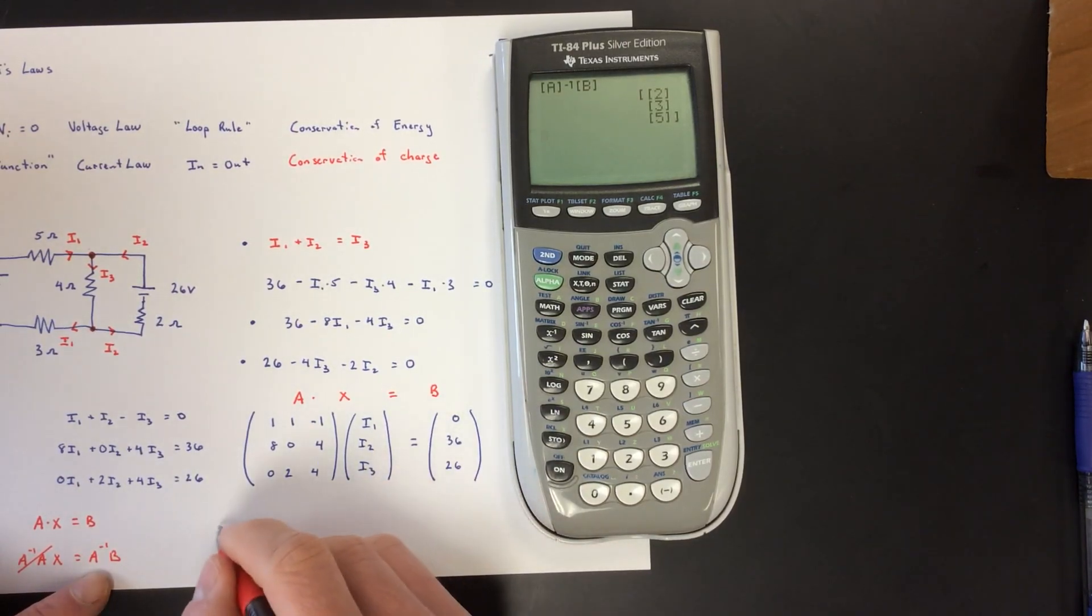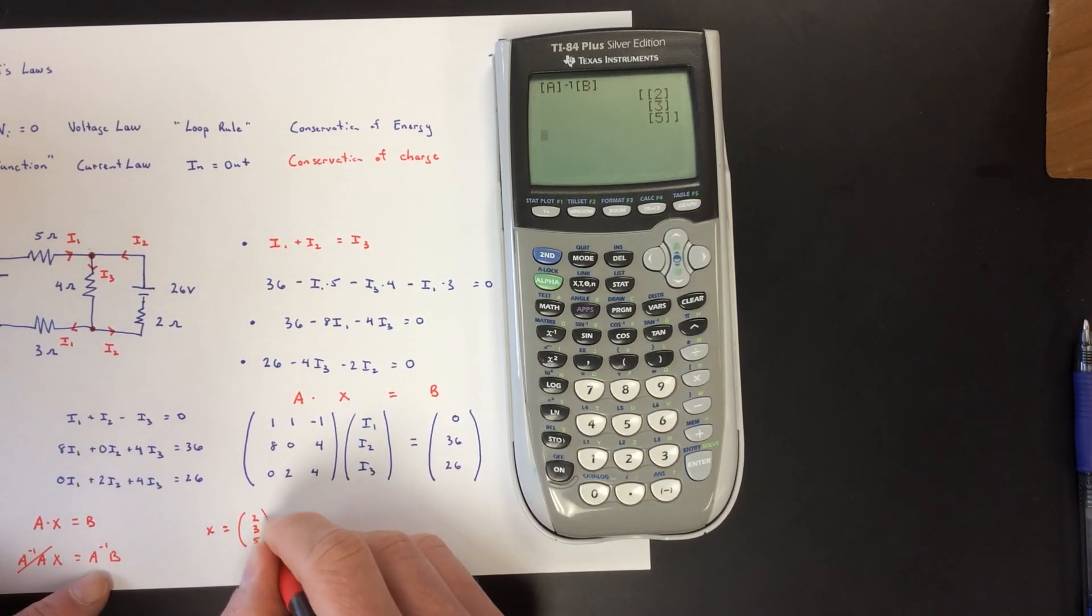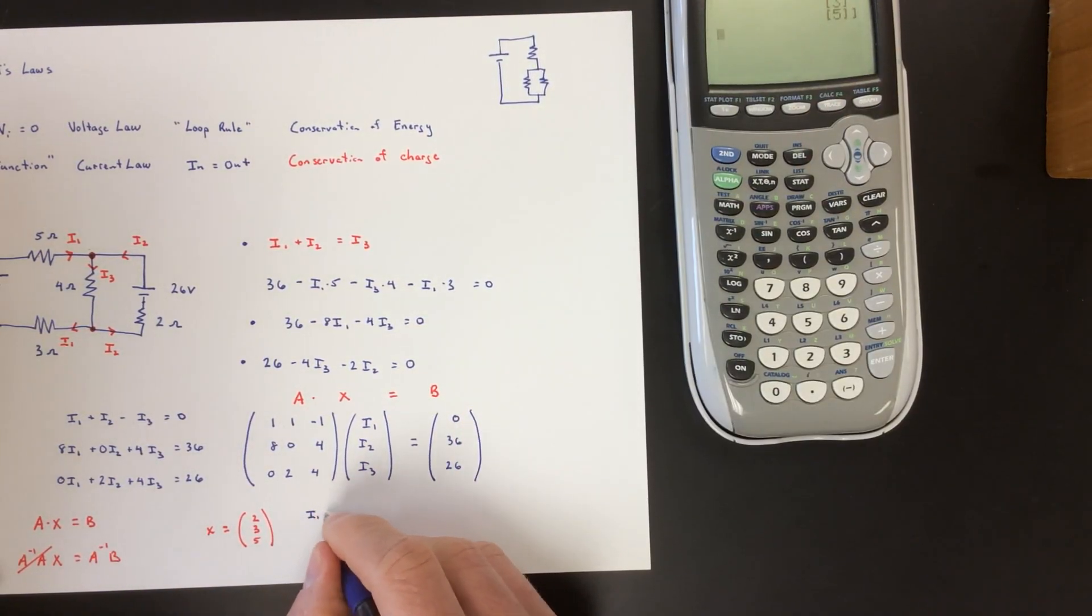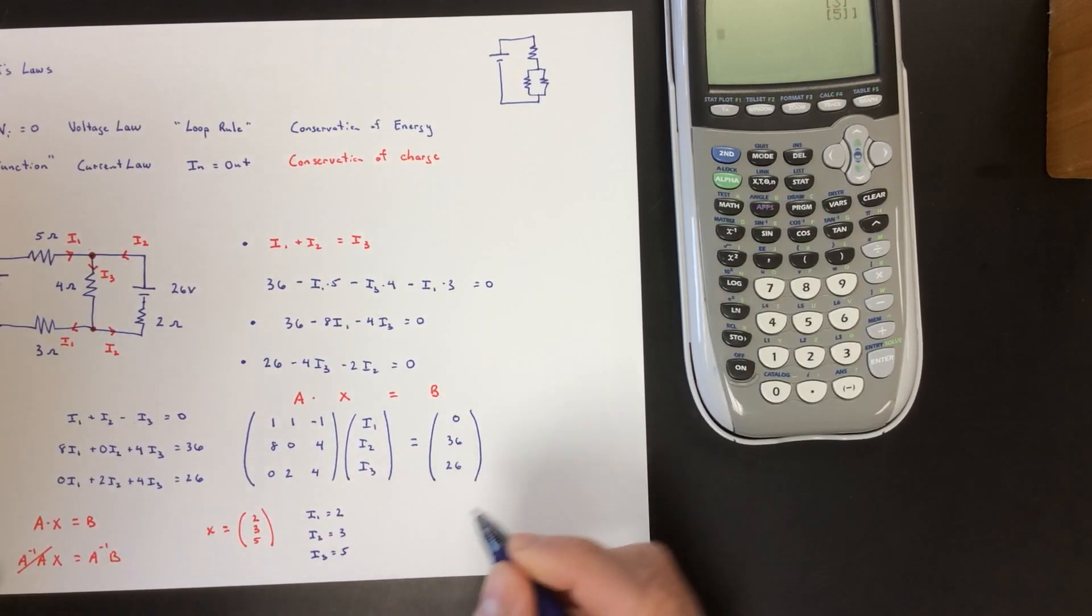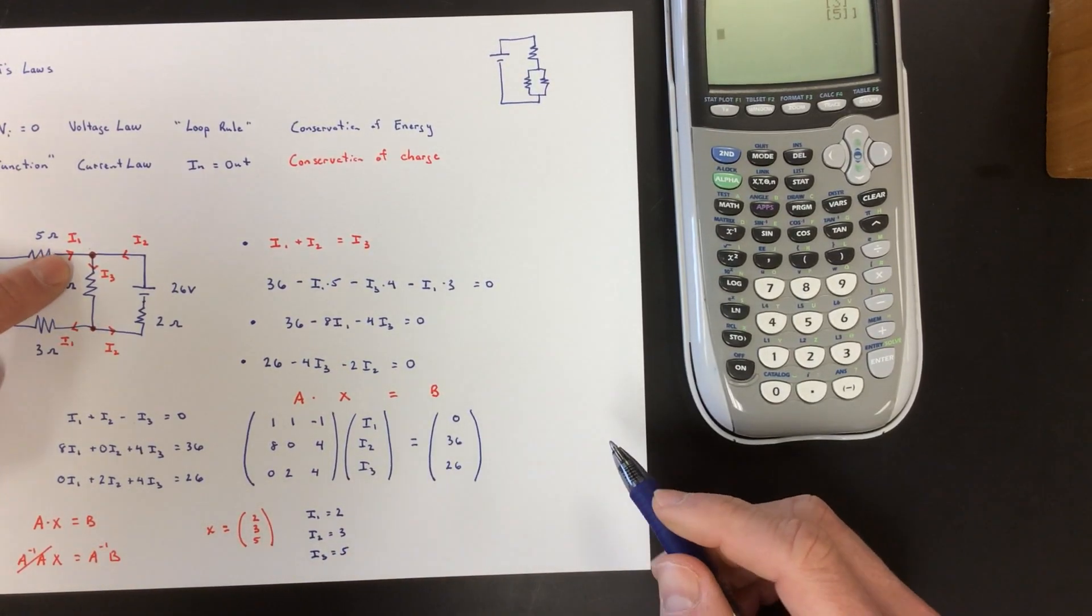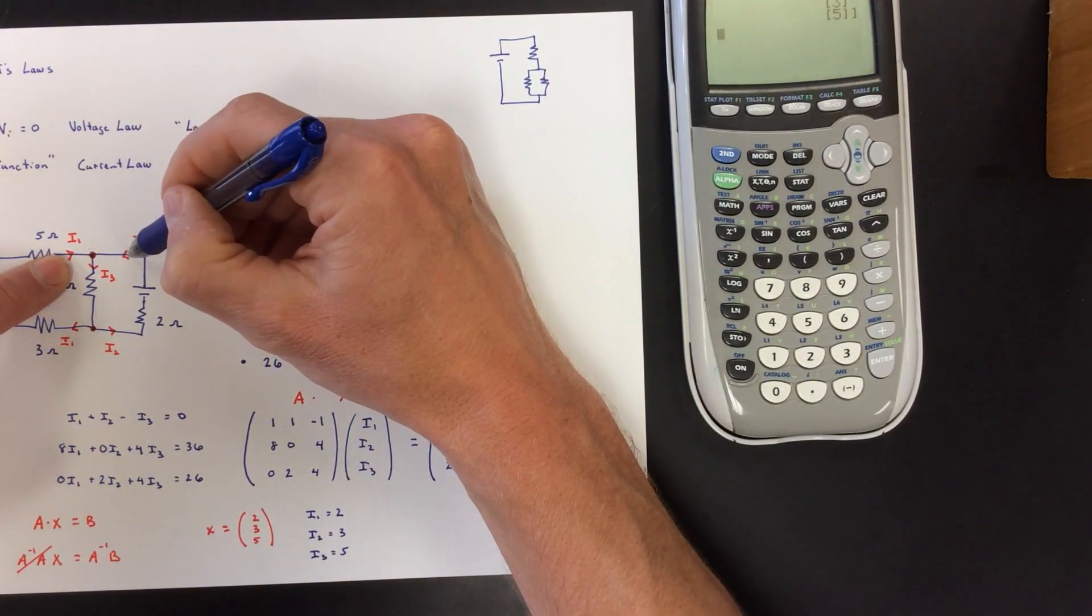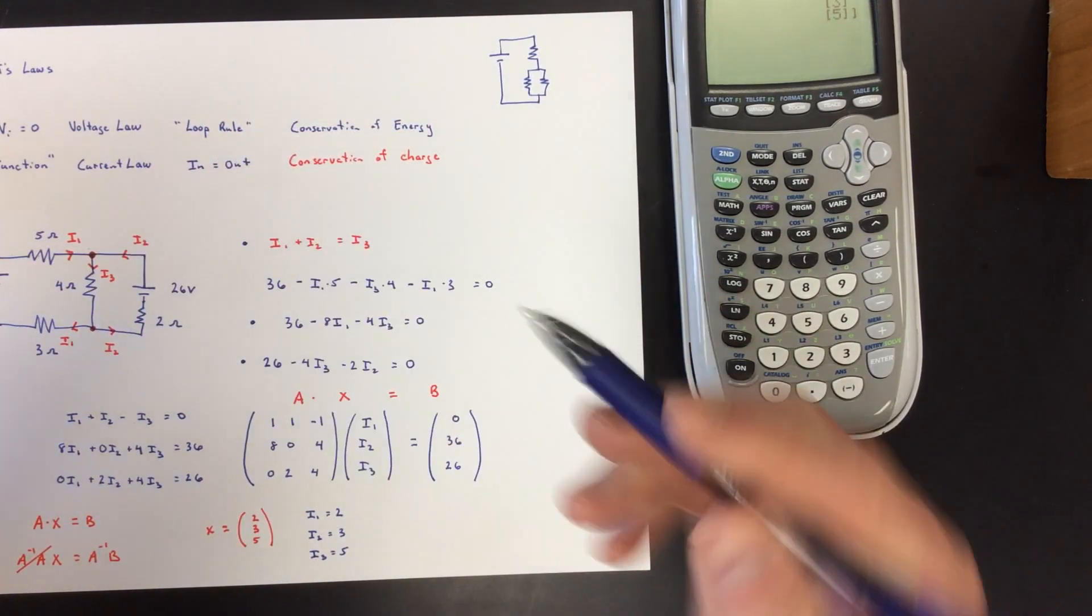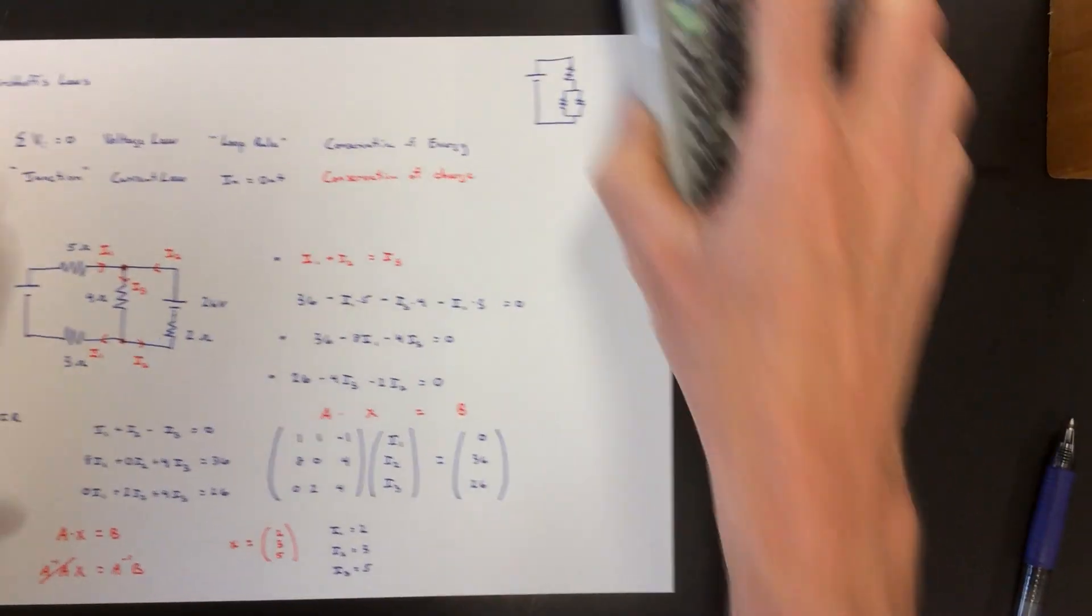So two, three, five is matrix X. X equals two, three, five, and what that's telling me is it knows then that I1 is two amps, I2 is three amps, and I3 is five amps. So what we're saying is two amps, three amps, joined to five amps, come down, and then split back to two and three amps, and then we could find all these voltages.